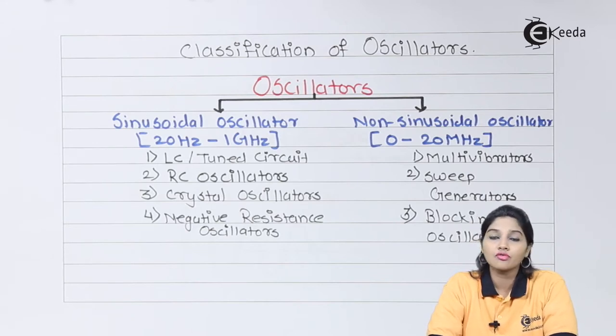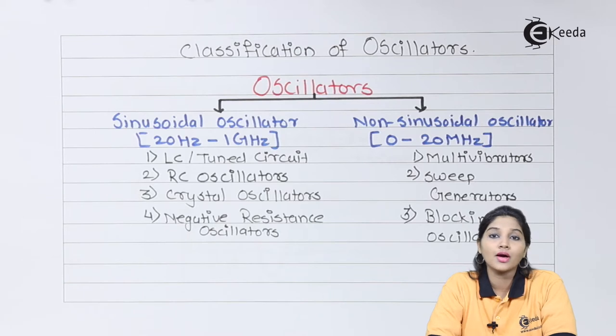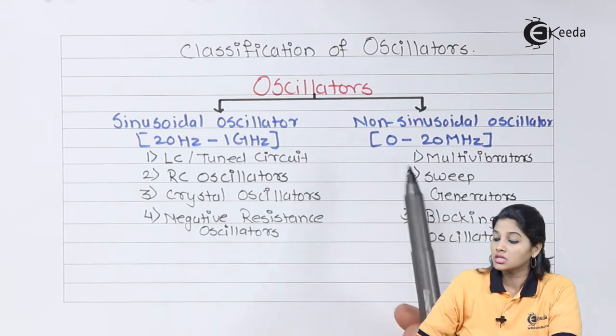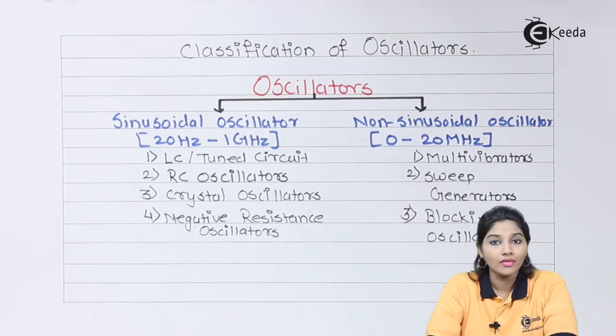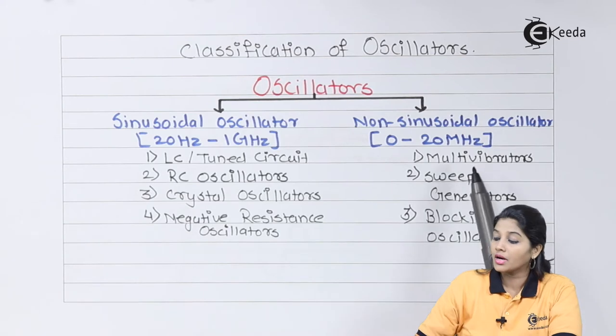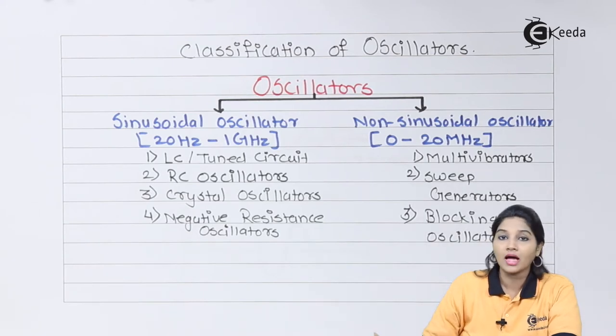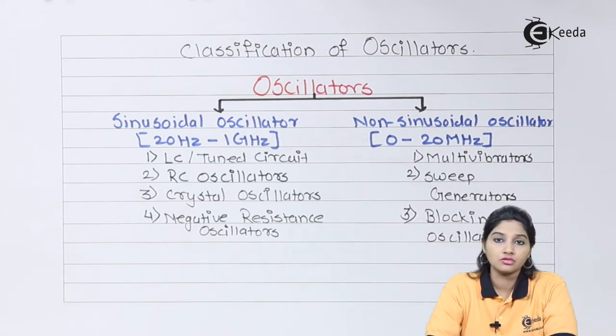Moving towards non-sinusoidal oscillators, there are three different types which provide a frequency range from 0 to 20 MHz, and they are: multivibrators, sweep generators, and blocking oscillators.